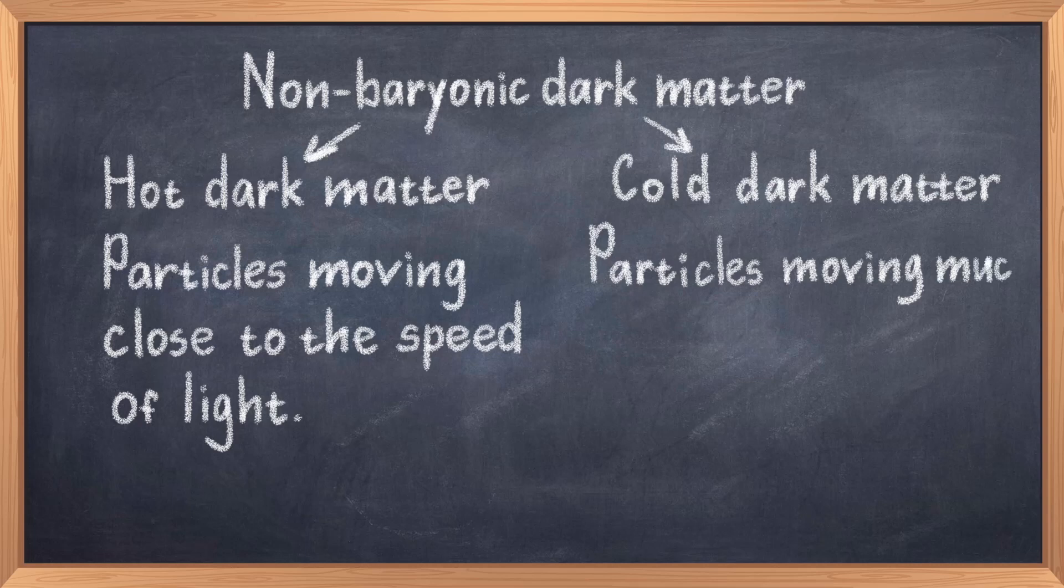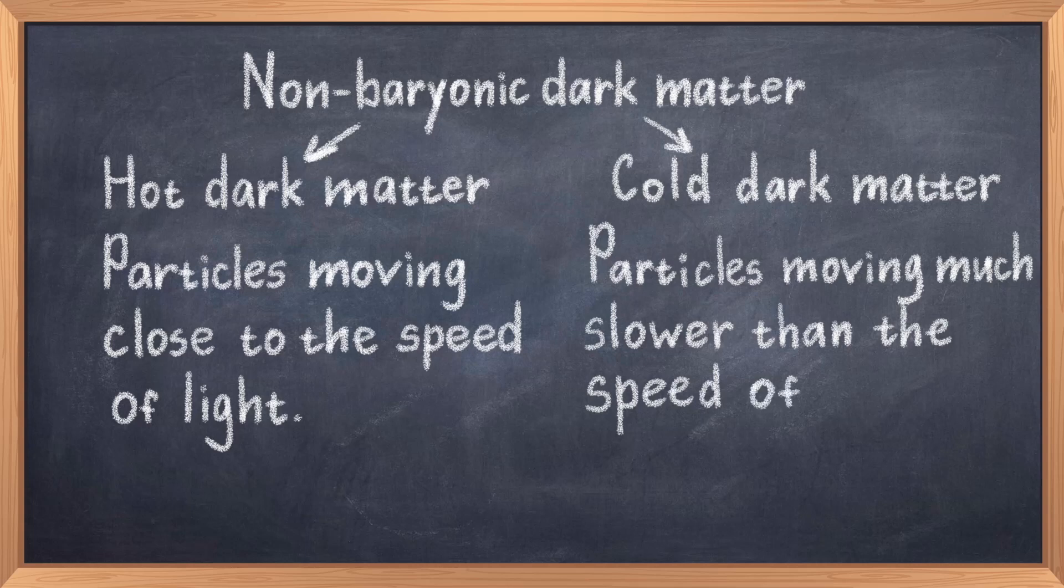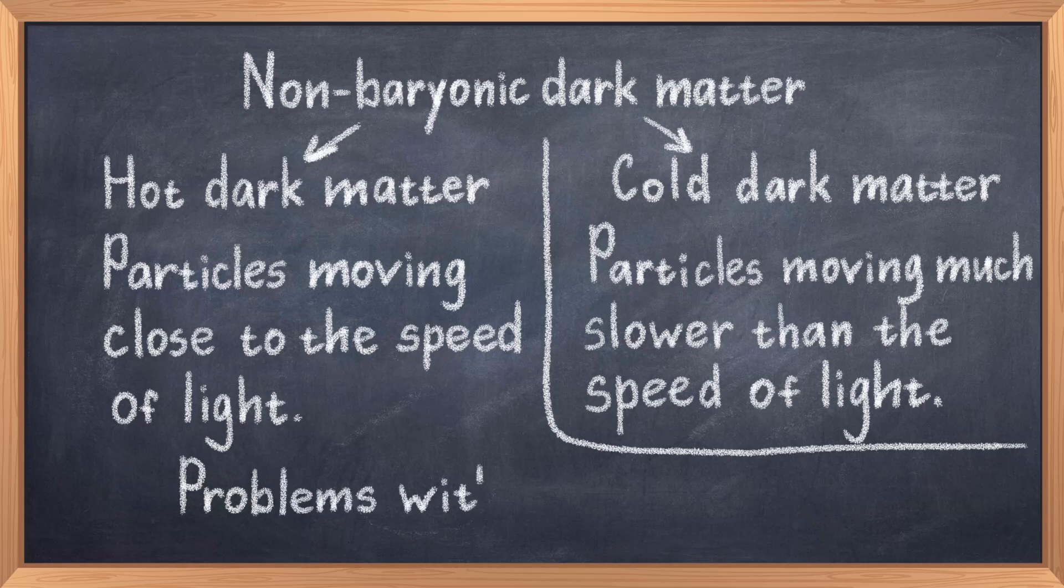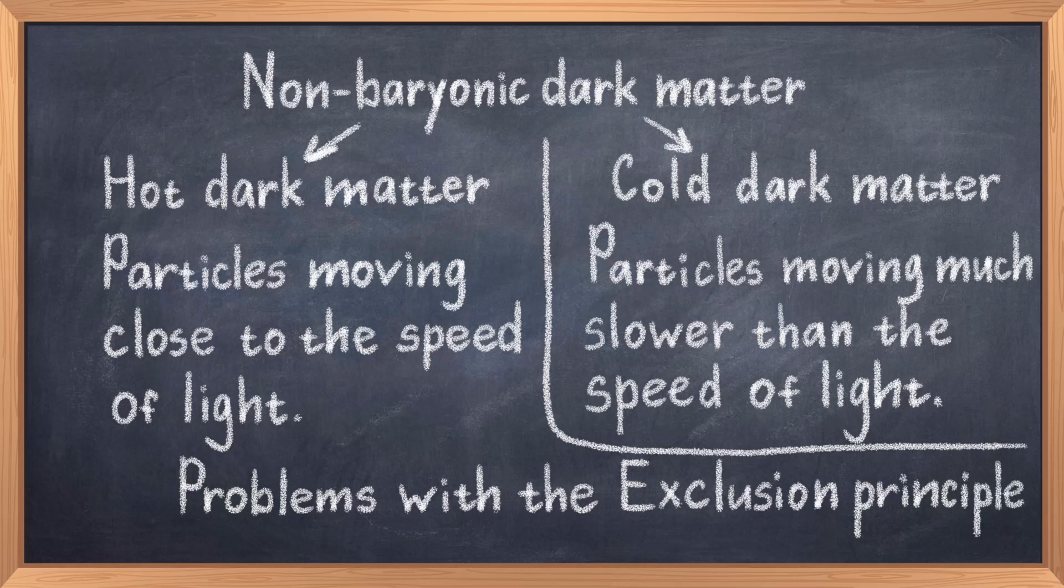The problem is that neutrinos are fermions, and fermions obey the Pauli exclusion principle, as discussed in one of my quantum mechanics videos. Because neutrinos are so light, we would need a colossal amount of them to match the expected amount of dark matter. The problem is that the Pauli exclusion principle dictates a limit to how many particles there can be in the same space. And it turns out that there simply wouldn't be space enough in galaxies to house so many neutrinos. Those neutrinos can only make up a small amount of dark matter.